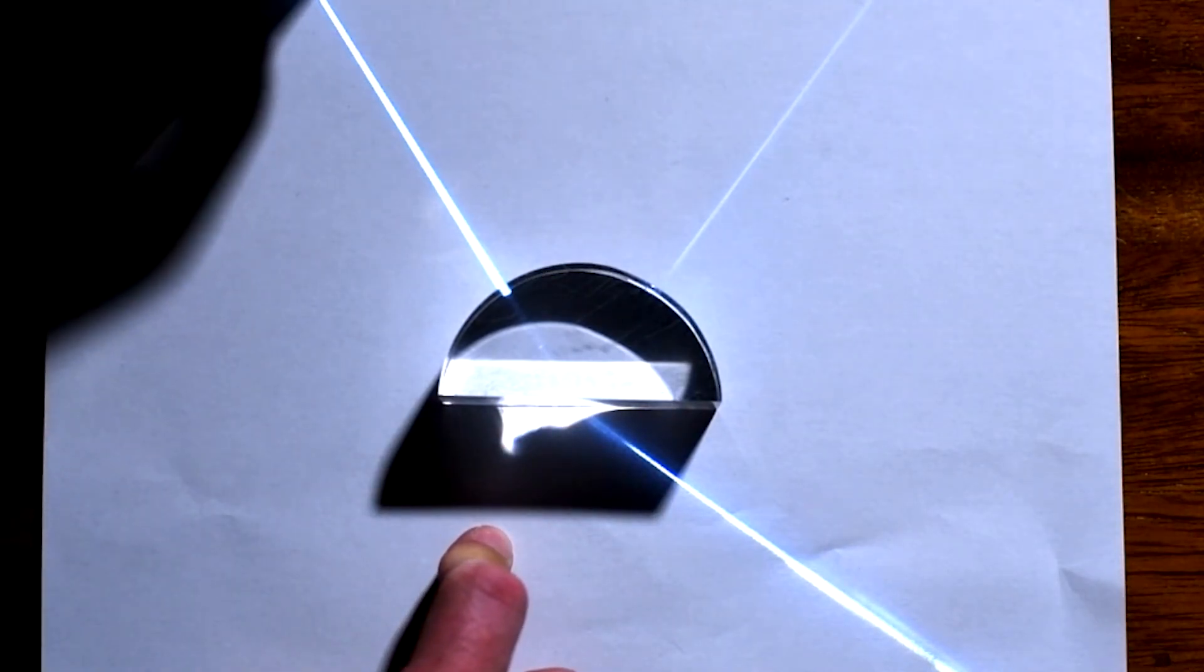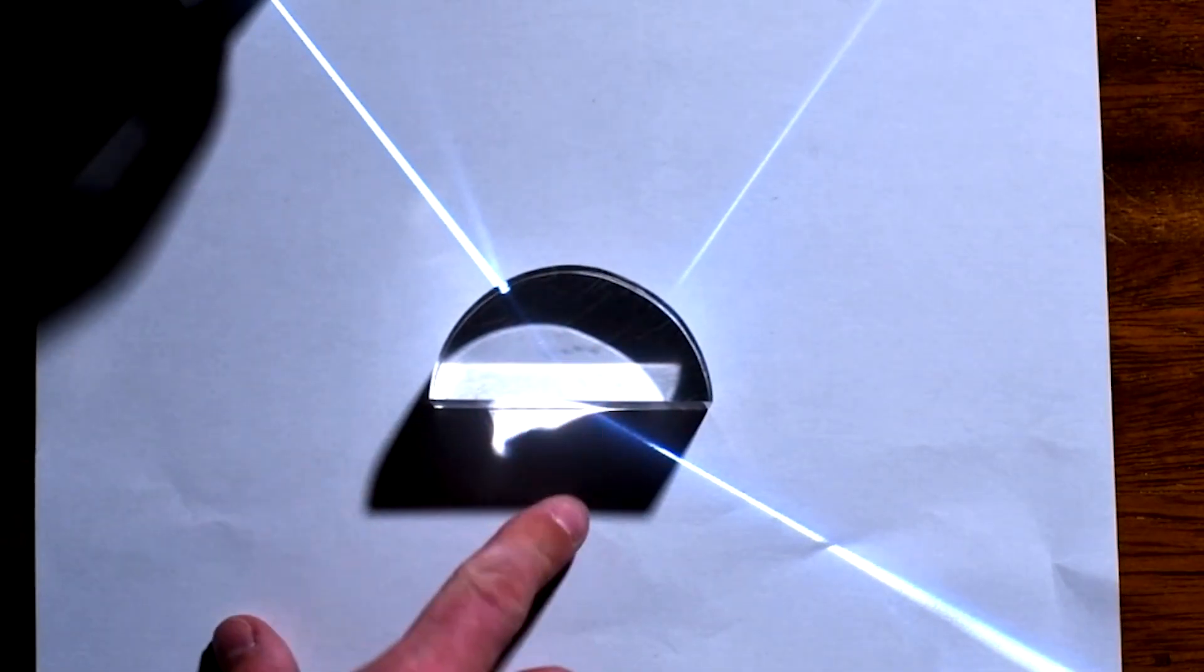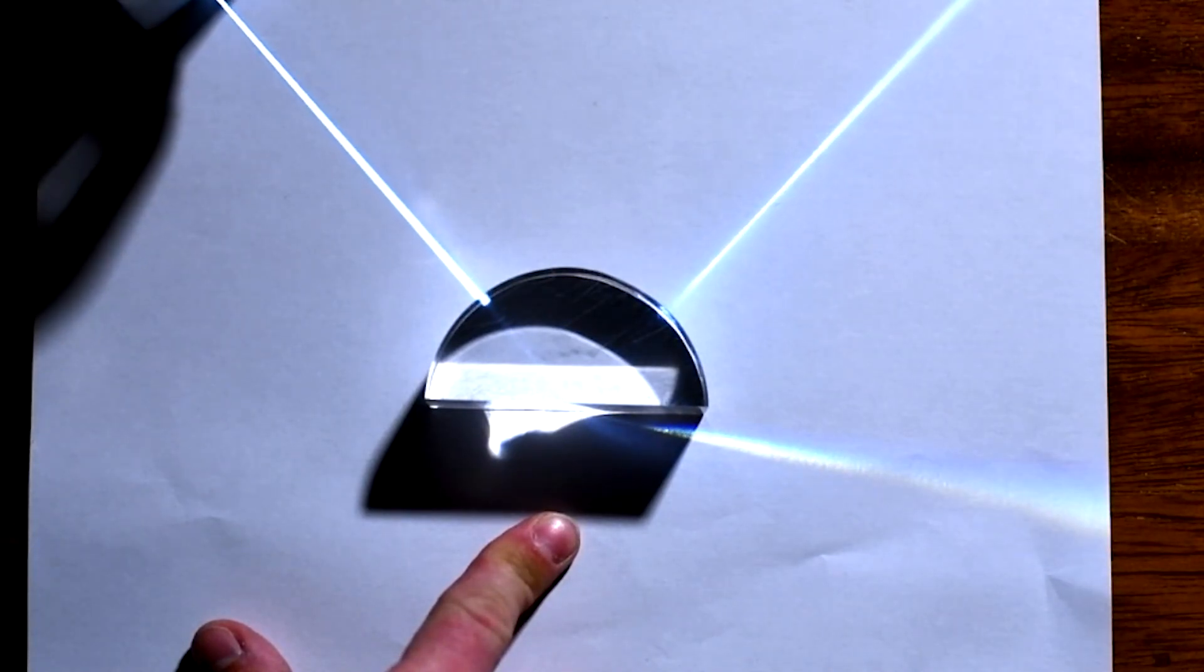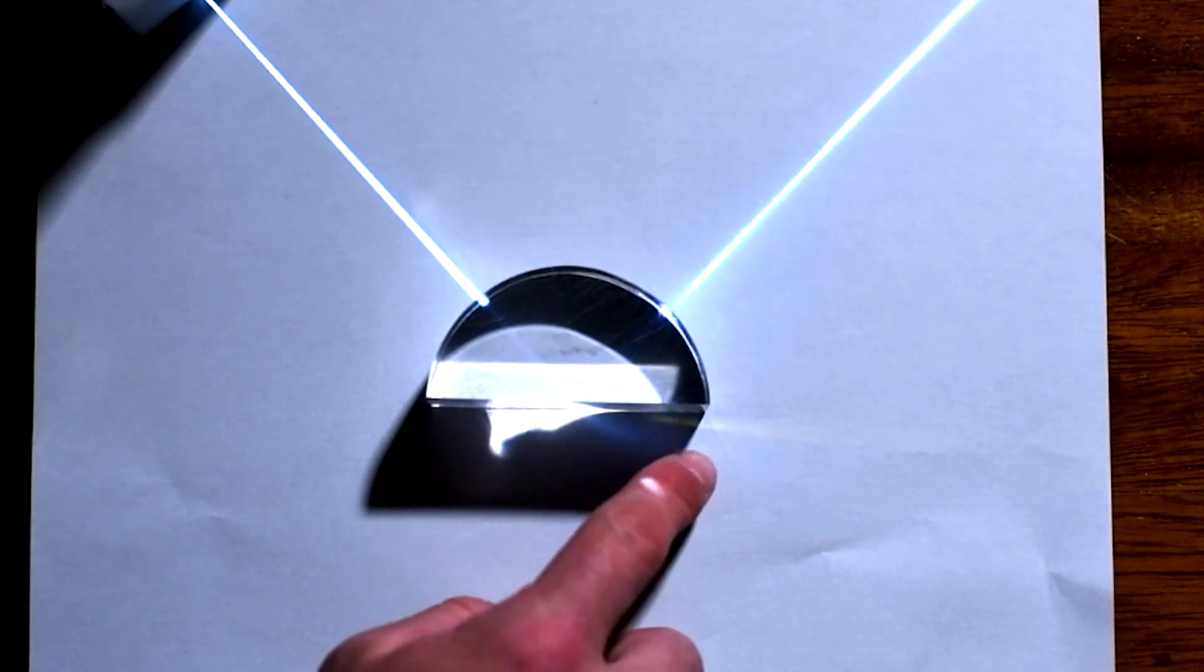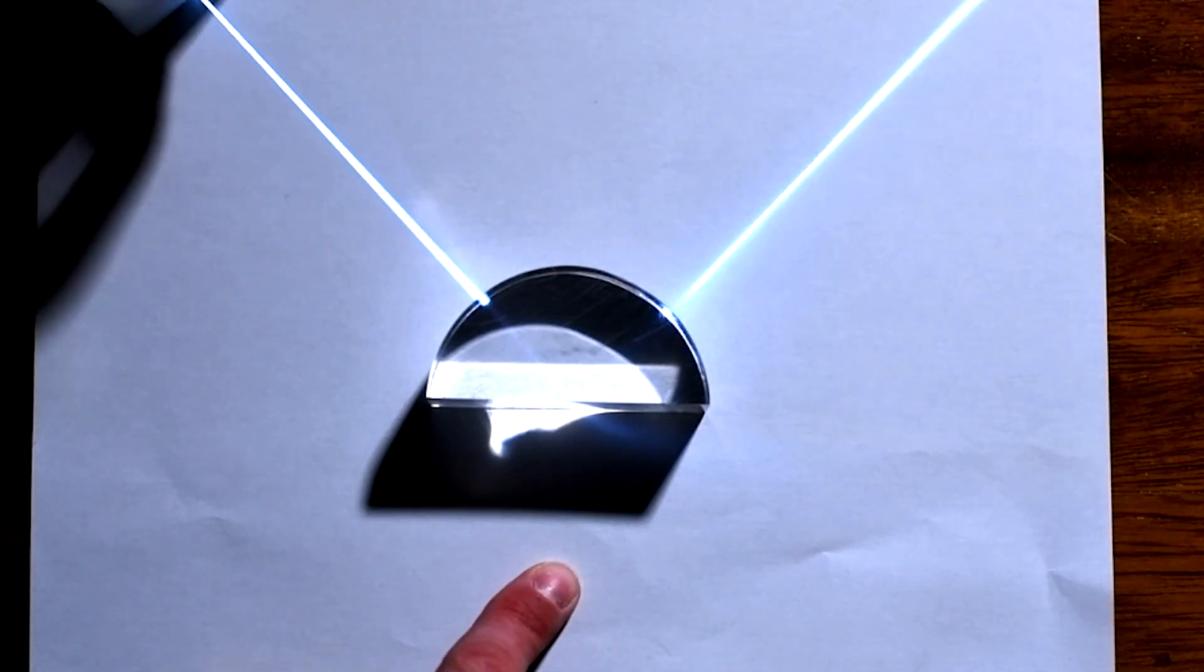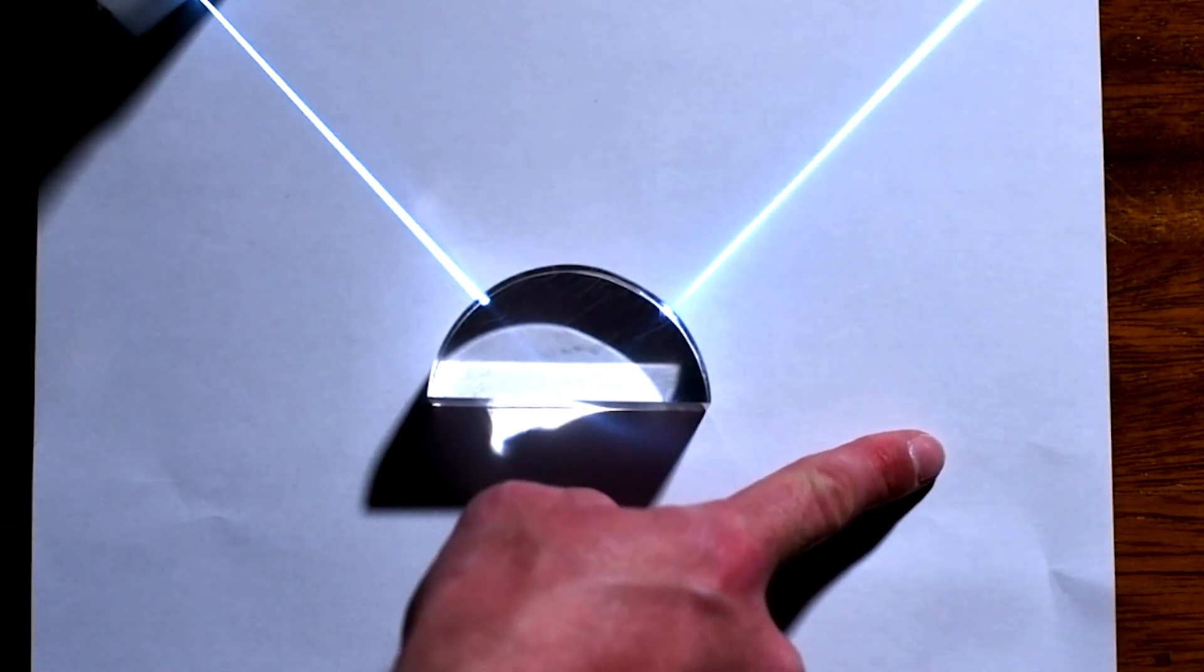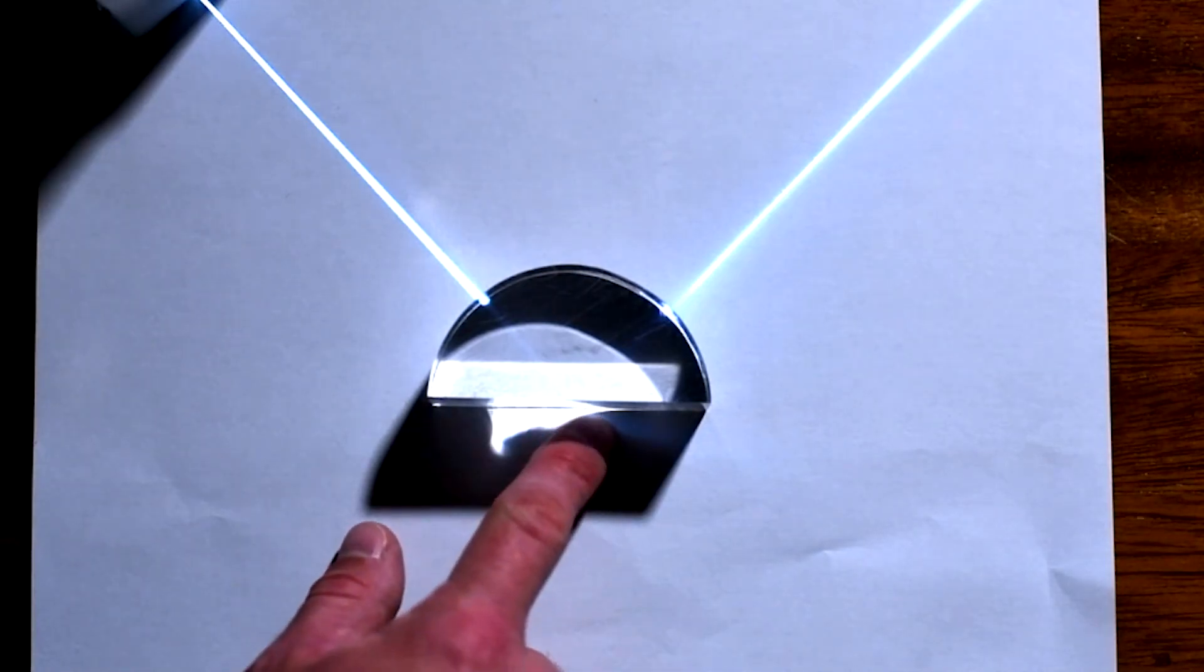Watch what happens when I increase the angle of incidence of the light ray that's inside the glass block. Can you see that as I increase the angle of incidence, the angle of refraction is getting bigger until, can you see that the refracted ray has all but disappeared? And if I do it ever so slightly more, now there is technically a light ray that is being refracted along the boundary. You just can't see it. No light is being refracted out.